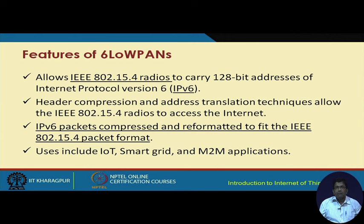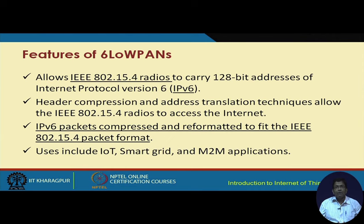This is made possible with the help of header compression and address translation techniques, which help convert 802.15.4 radios to access the internet. IPv6 packets are compressed and reformatted to fit the 802.15.4 packet structure. So IPv6 packets, large in size, are compressed, reformatted, and mapped to the packet format of 802.15.4, which is primarily meant for low power small-scale networks as is typical of IoT.